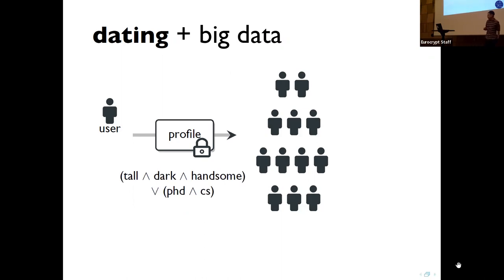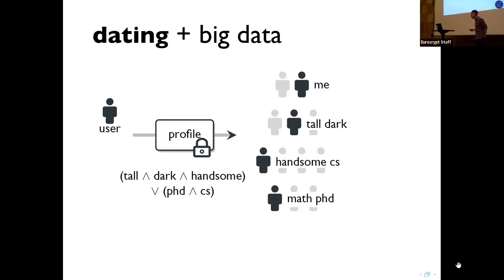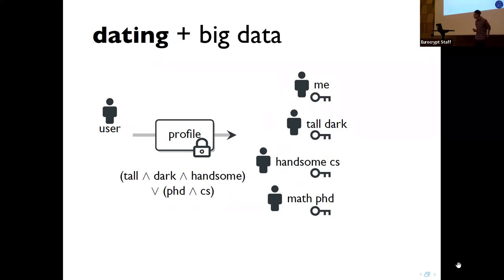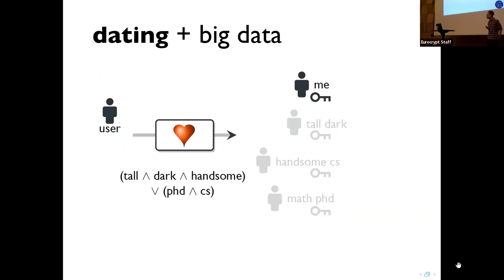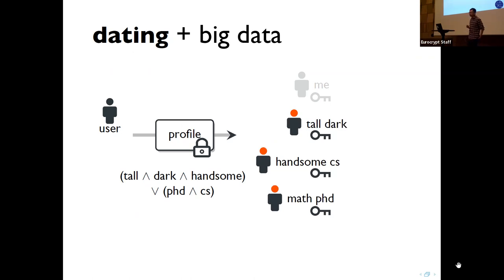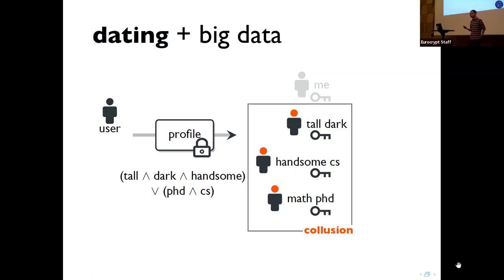When other users join the system, they are associated with what we call attributes, and they get secret keys tailored to those attributes. The correctness requirement says that if you have a key for attributes that match the access policy, you should be able to decrypt the message and see the profile. Anyone else with attributes that don't satisfy the access policy should learn nothing whatsoever — even if there's a collusion where an adversary holds multiple secret keys.